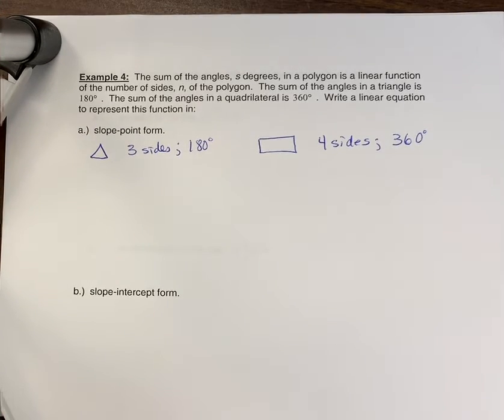Example 4a: the sum of the angles, s degrees, in a polygon is a linear function of the number of sides n of the polygon.